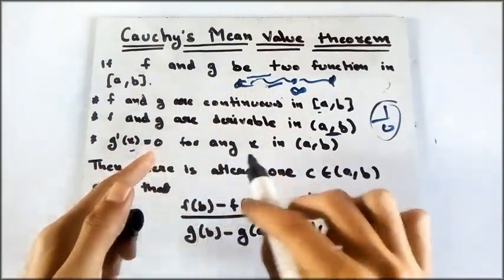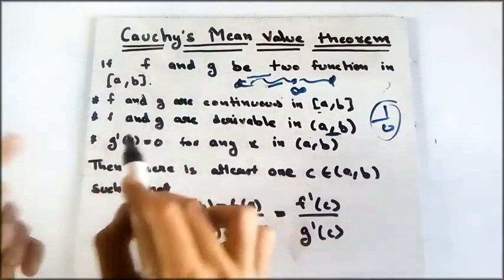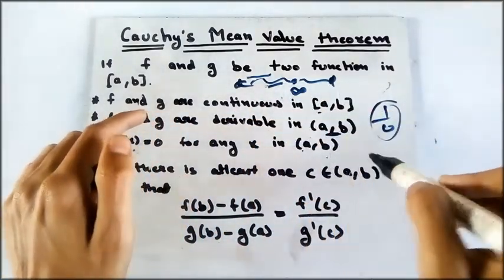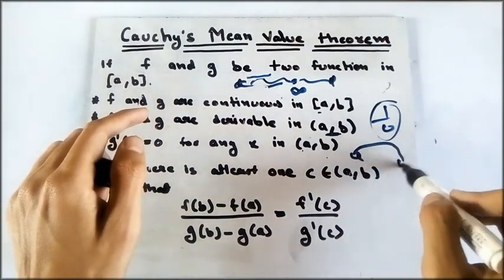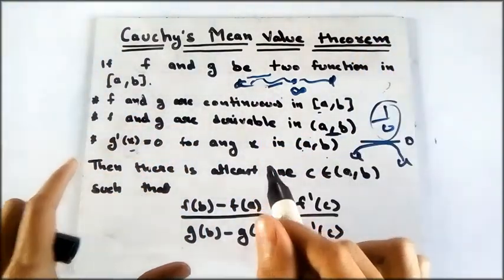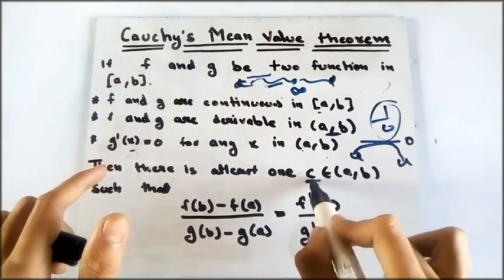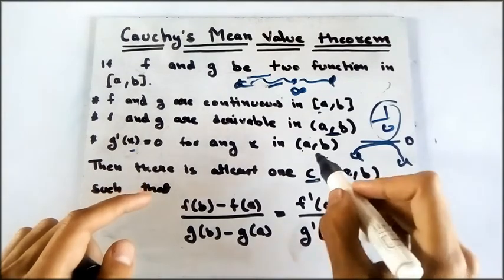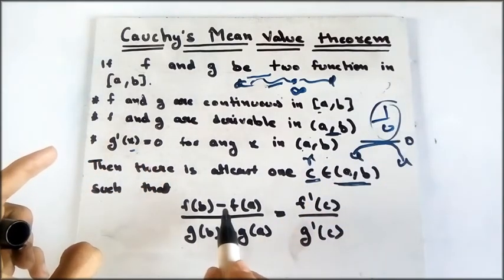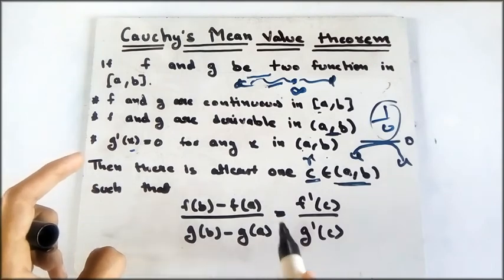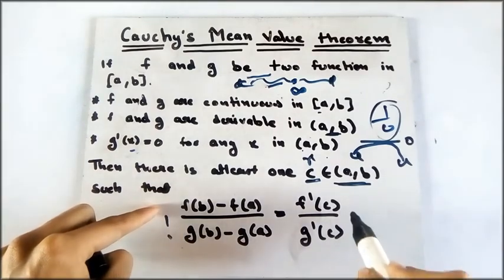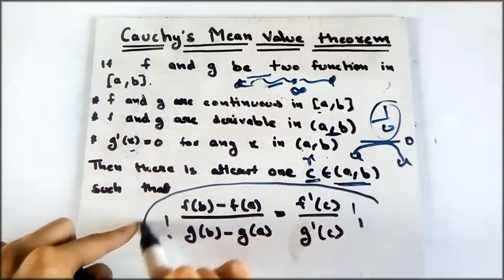The last condition is that g'(x) ≠ 0 for any x in (a,b). That means the function g doesn't become zero anywhere between a and b, like the slope of tangent is not zero between a and b. If these are true, then there is at least one c, a value between a and b, such that [f(b)-f(a)]/[g(b)-g(a)] = f'(c)/g'(c). That means the ratio of this is equal to the ratio of this. This is Cauchy's Mean Value Theorem.